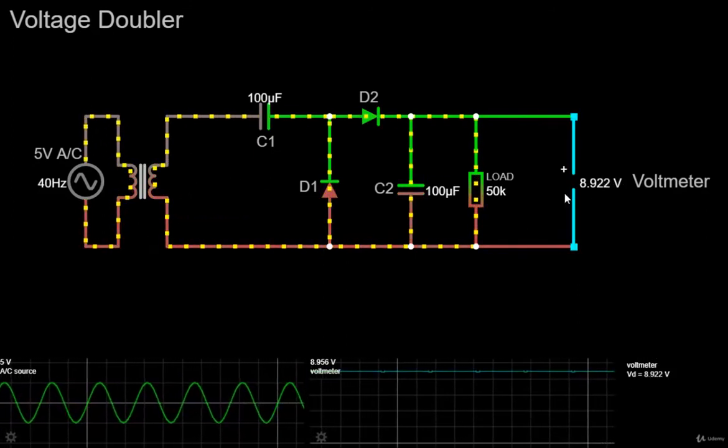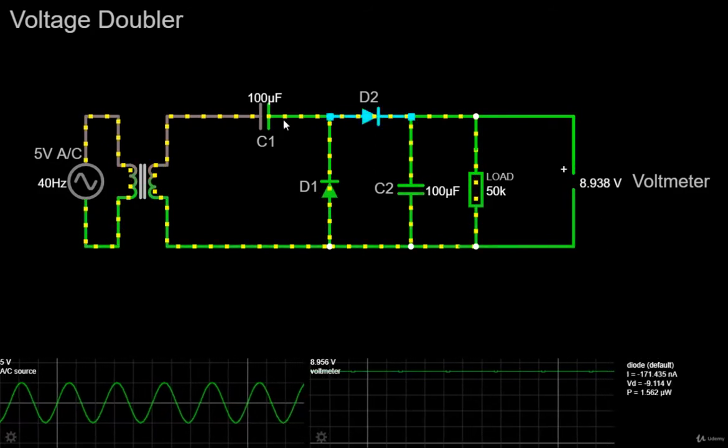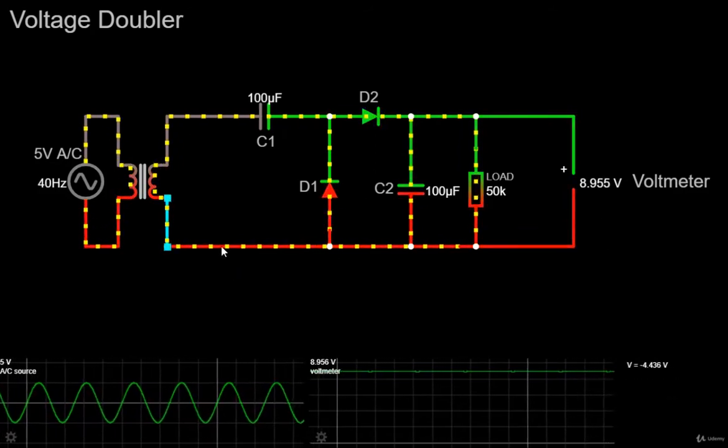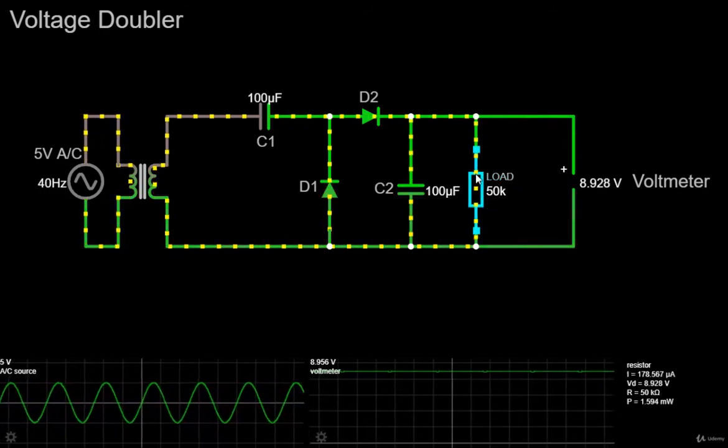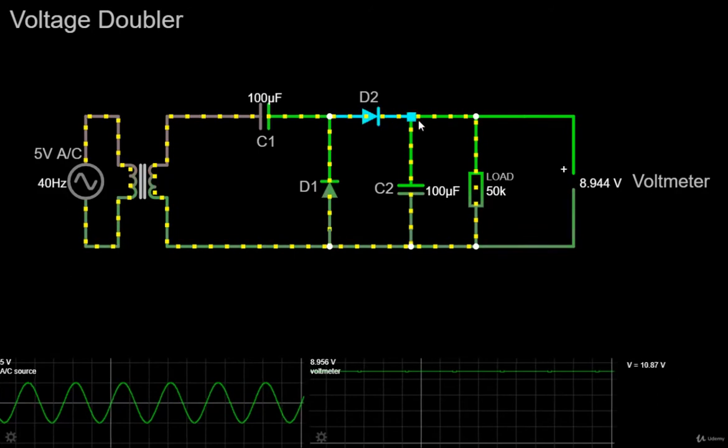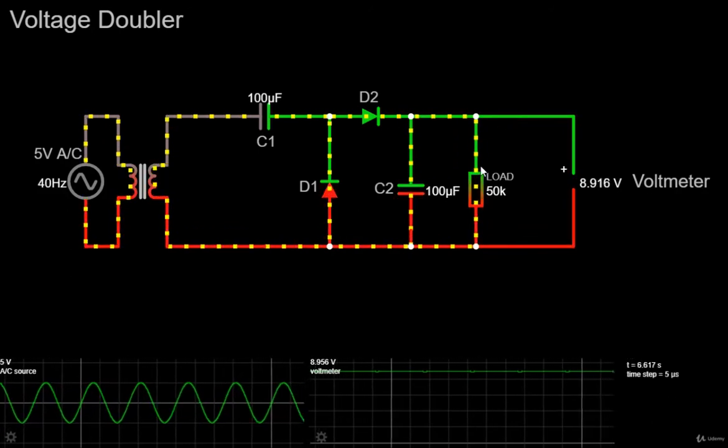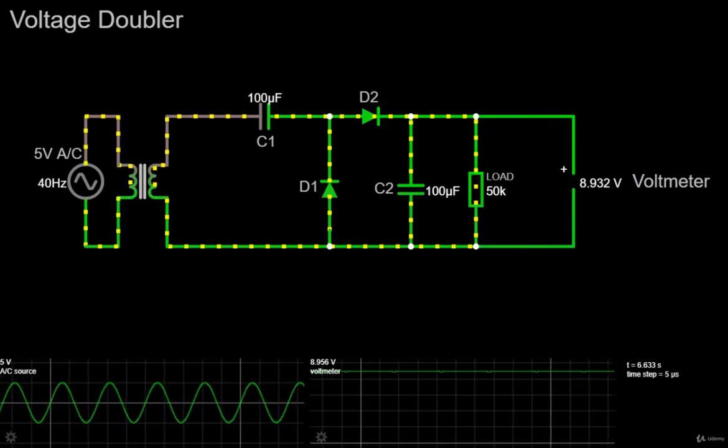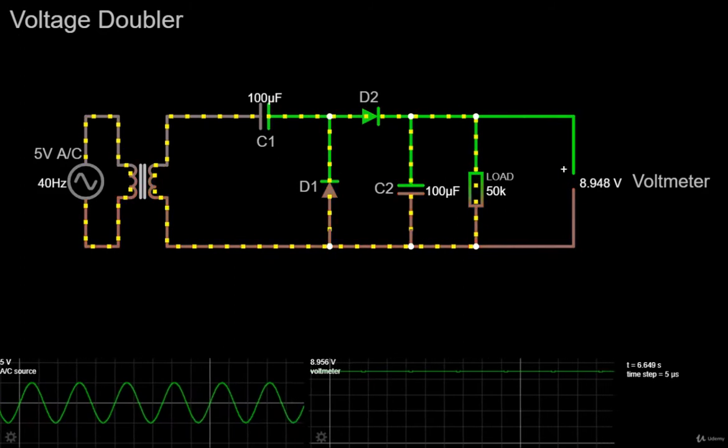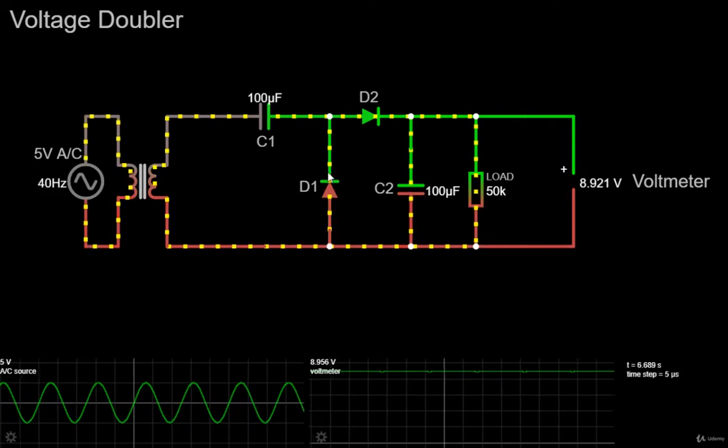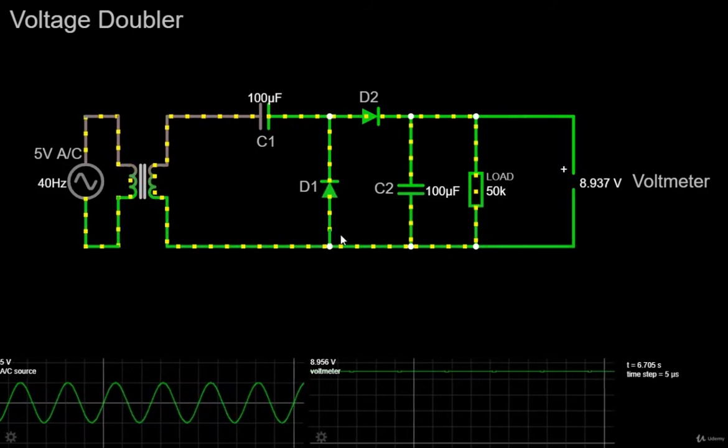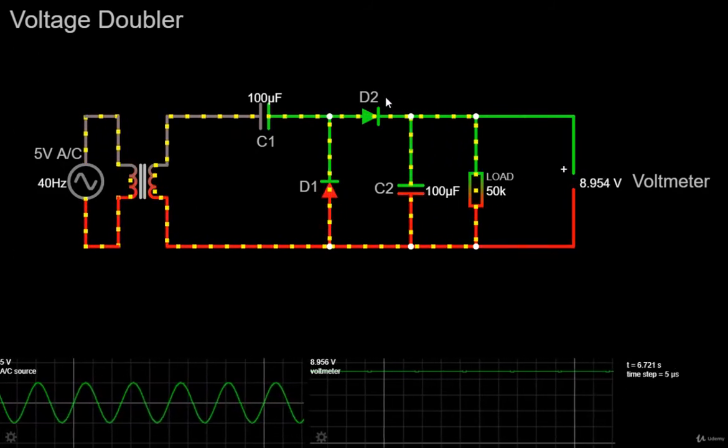However, while voltage multipliers can boost the voltage, they can only supply low currents to a high resistance load because the generated output voltage quickly drops off as load current increases. Also, note that by reversing the direction of the diodes and capacitors in the circuit, we can also reverse the direction of the output voltage creating a negative voltage output.